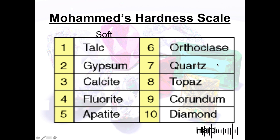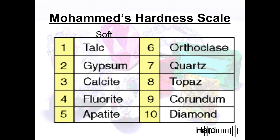Next is quartz, rated 7 on the Mohs scale. Quartz contains silicon and oxygen atoms and is commonly used in sand and electronic devices and accessories.